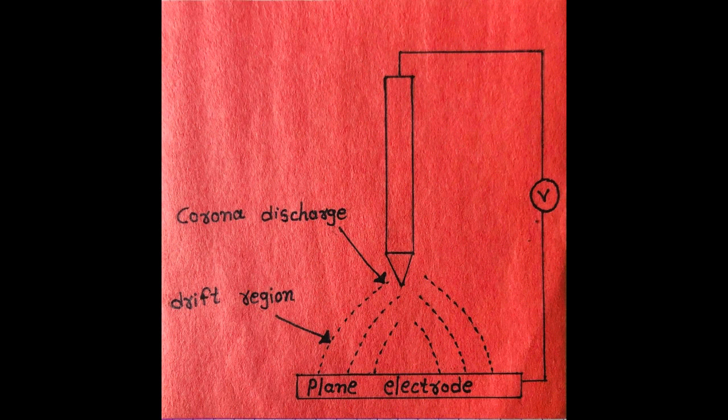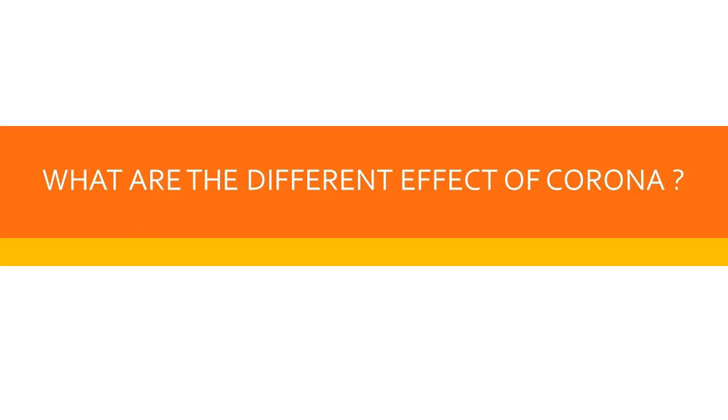If voltage across line conductor is still increased, then the glow becomes more and more intense along with high hissing noise, inducing very high power loss in the system. So what effects occur and how will it affect our transmission line?